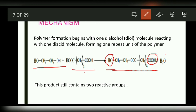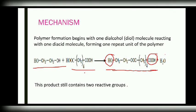So why are bifunctional monomers necessary for polymer formation? Bifunctional monomers result in linear chain polymers. If you take a mixture of bifunctional and trifunctional monomers, it leads to branched or cross-linked polymers.